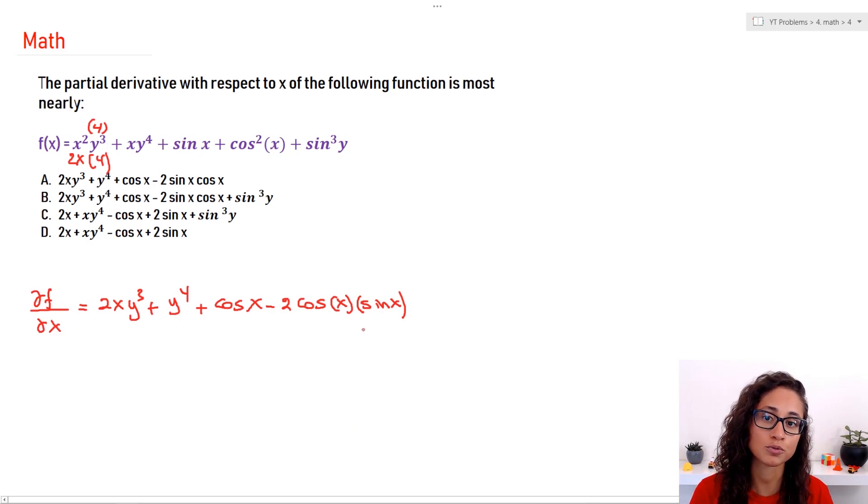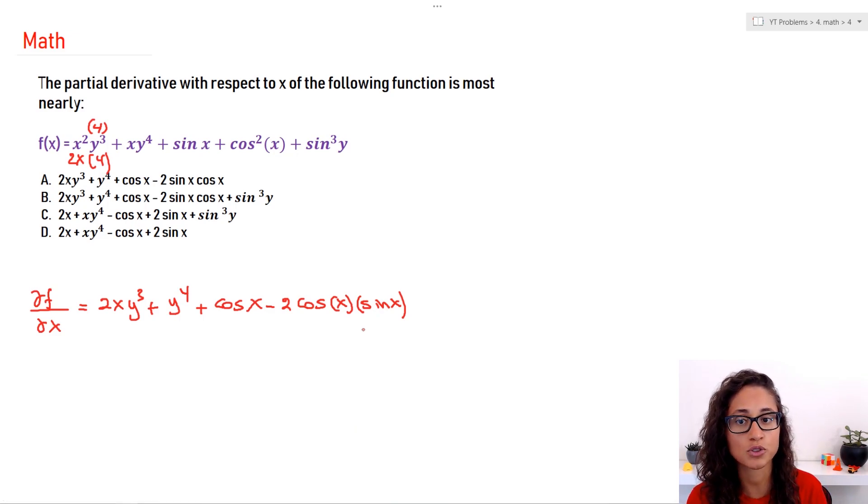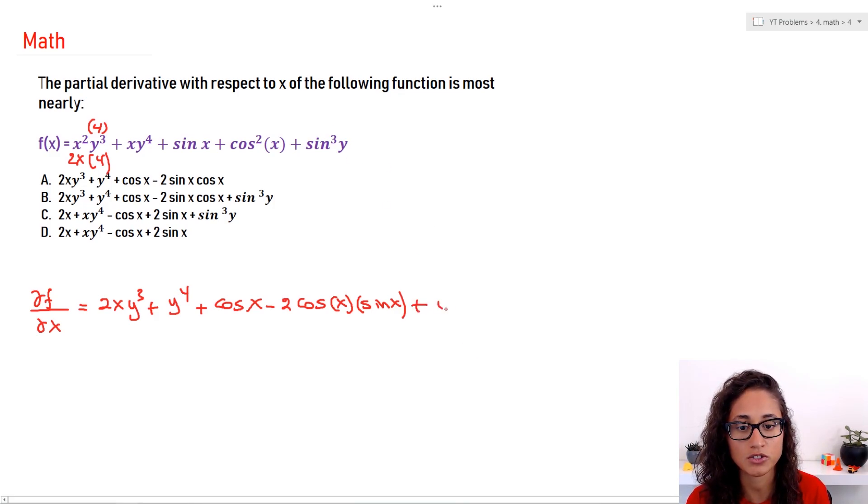Then I have sine cubed of y. y is treated here as a constant, so that's going to be zero. So plus zero. So that's it. The answer is going to be A.